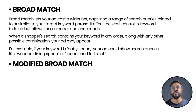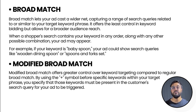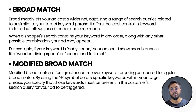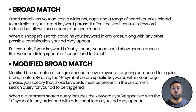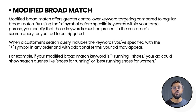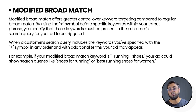Modified broad match offers greater control over keyword targeting compared to regular broad match. By using the plus symbol before specific keywords within your target phrase, you specify that those keywords must be present in the customer's search query for your ad to be triggered. Your ad appears when a customer's search query includes the keywords specified with a plus symbol, in any order and with any additional terms. For example, if your modified broad match is '+running +shoes,' your ad could show for queries like 'shoes for running' or 'best running shoes for women.'